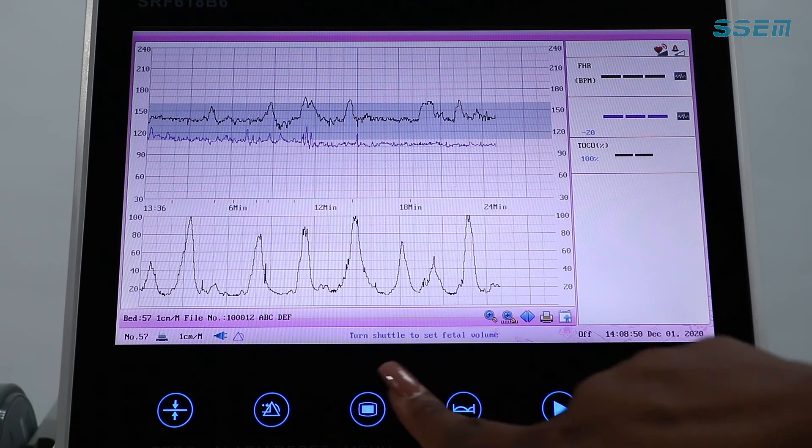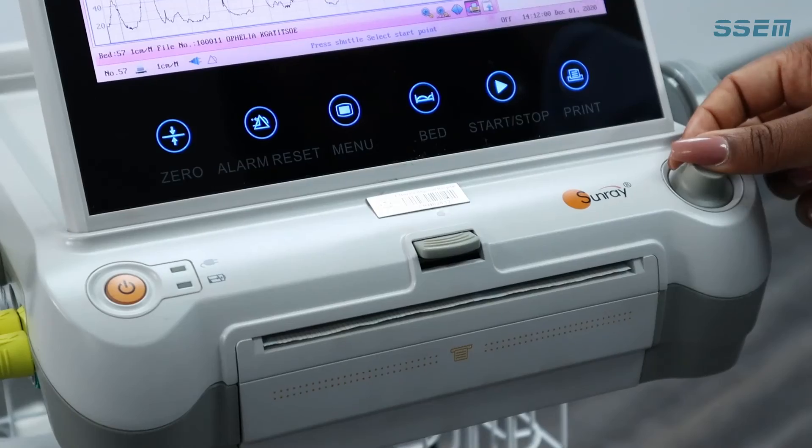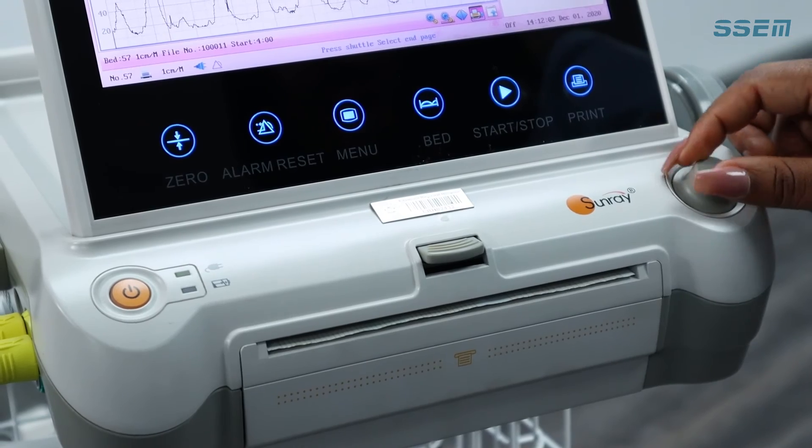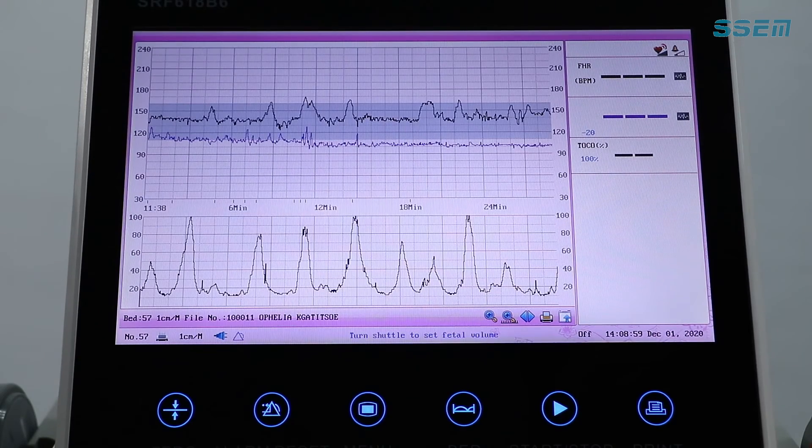This means you can always load old files and print out your tracing again. So you do this by press menu, load files, pick a file you would like to see again by rotating the control knob and highlighting it in green, confirm and print.